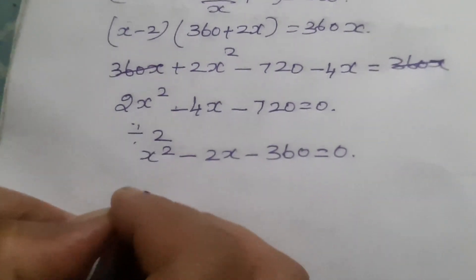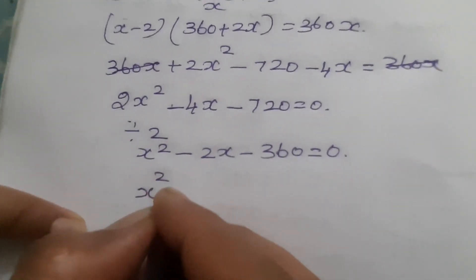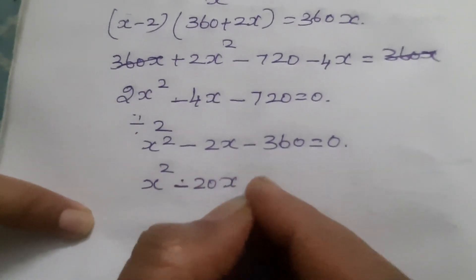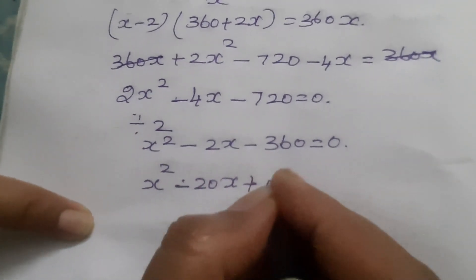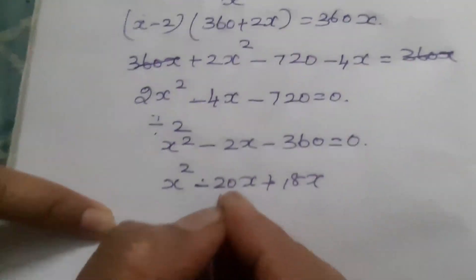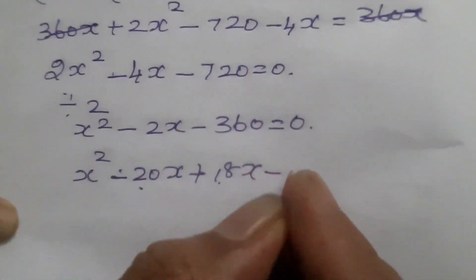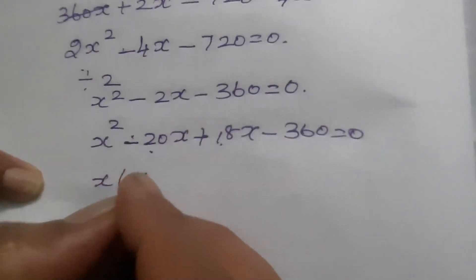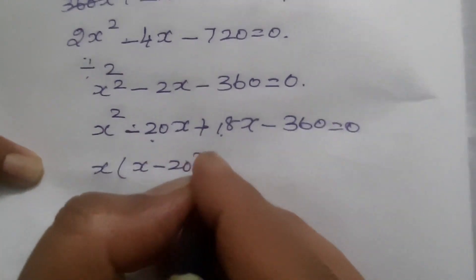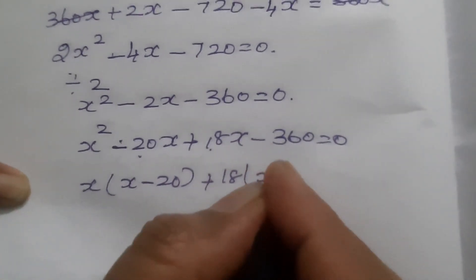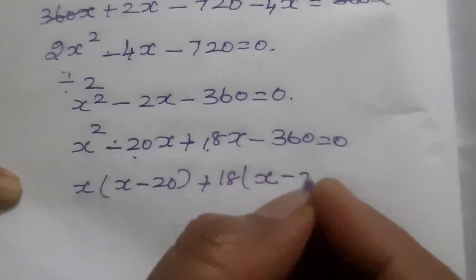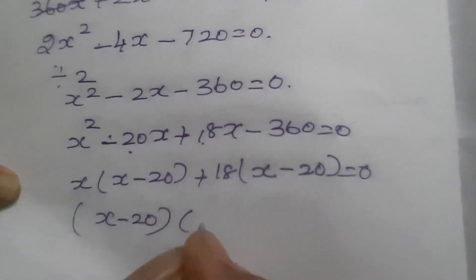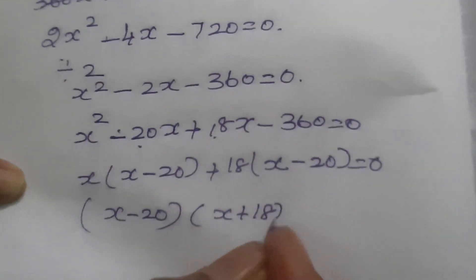Now we have to split the middle term. X square, then minus 20X plus 18X, where the split is minus 20 and 18, giving minus 360 equal to 0. Taking X outside: X into X minus 20, plus 18 into X minus 20 equal to 0.